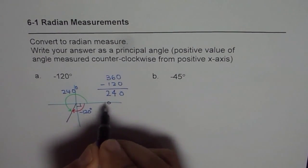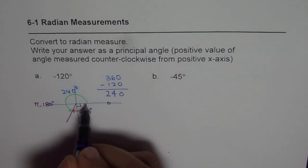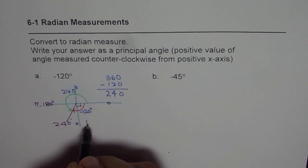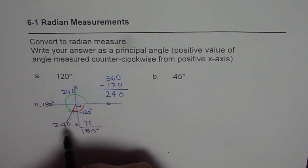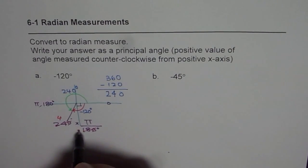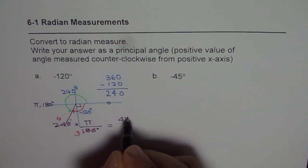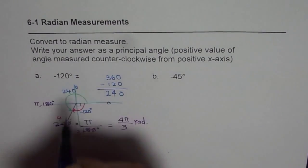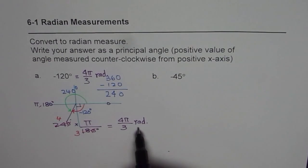Now let's convert 240 degrees to radians: 240 × π ÷ 180. Dividing by 10 removes the zeros; then both 24 and 18 can be divided by 6, giving 4 and 3. So we get 4π/3. Therefore, minus 120 degrees equals 4π/3 radians. Note that radians is a ratio, so even without writing the unit it is implied.